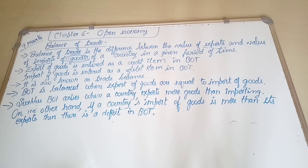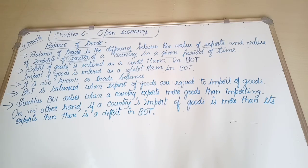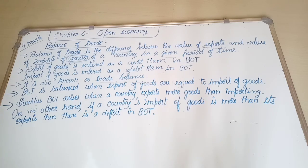Hello everyone, welcome back to CM Asse Academy. In today's video we are going to learn a four-marks question from Chapter 6, Open Economy — that is, write a note on balance of trade. This balance of trade concept comes under the components of the current account. There are three components: trade in goods, trade in services, and transfer payments.